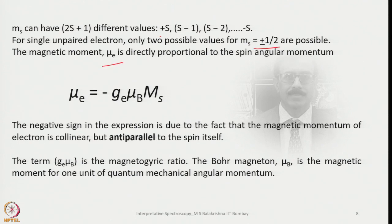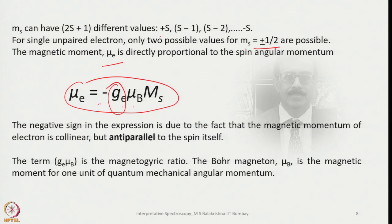The magnetic moment μₑ is directly proportional to the spin angular momentum, related by: μₑ = −gₑ μ_B mₛ. The negative sign arises because the magnetic moment of the electron is collinear with the applied magnetic field but anti-parallel to the spin itself. The term gₑμ_B is the magnetogyric ratio.